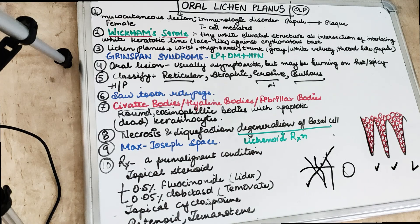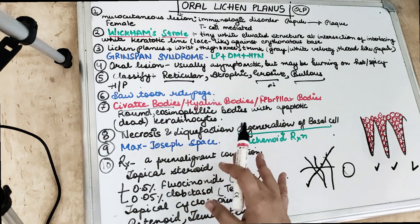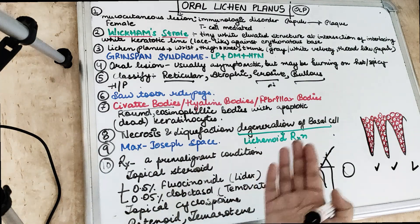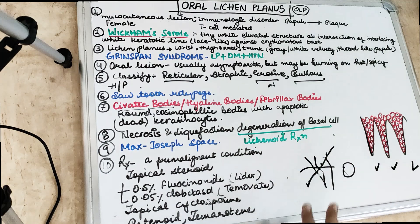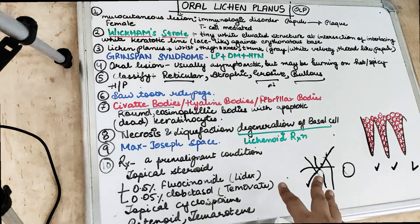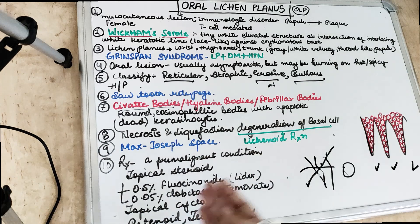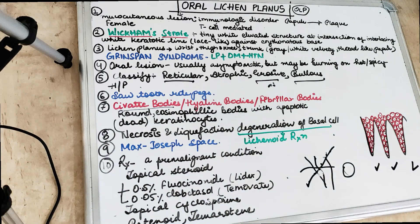The dead keratinocytes, when present in the epithelium, form the civatte bodies — eosinophilic bodies containing dead keratinocytes — also called hyaline bodies or fibrillar bodies. This degeneration of the basal cell layer is termed the lichenoid reaction, which demonstrates degeneration of basal epidermal cells. Lichenoid reactions are also seen in other diseases such as secondary syphilis, erythema multiforme, and lupus erythematosus.